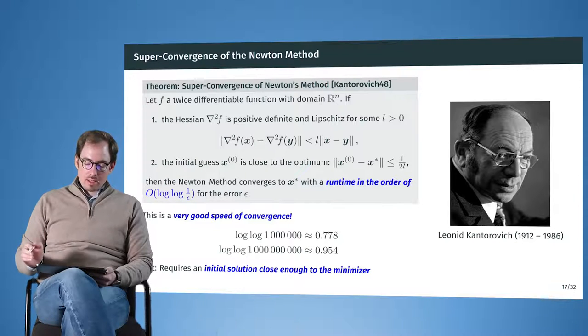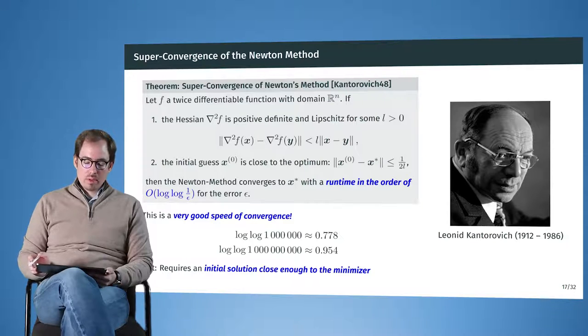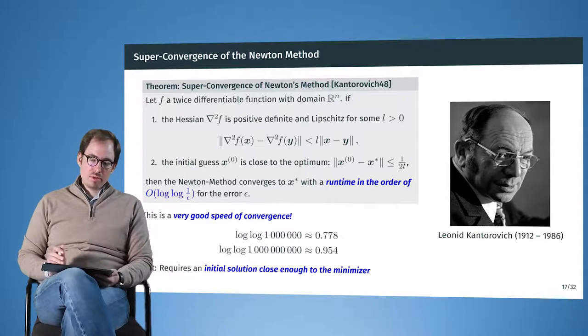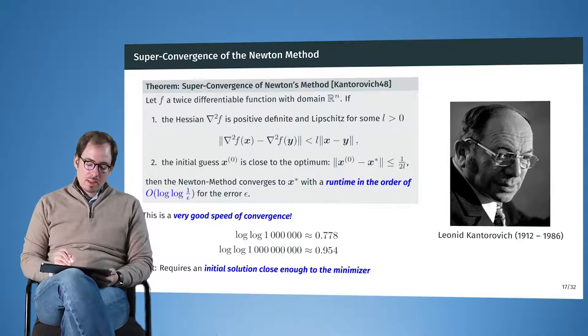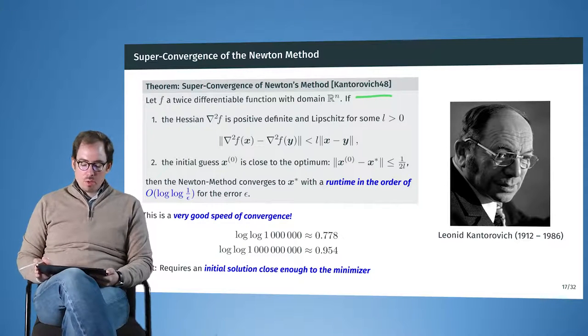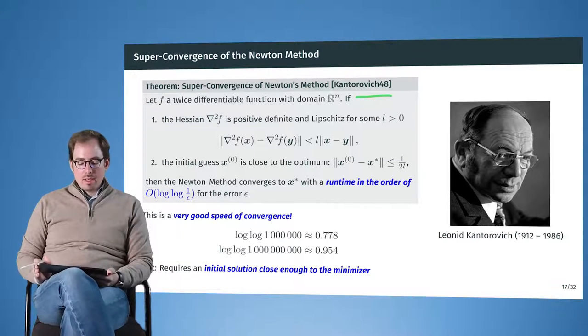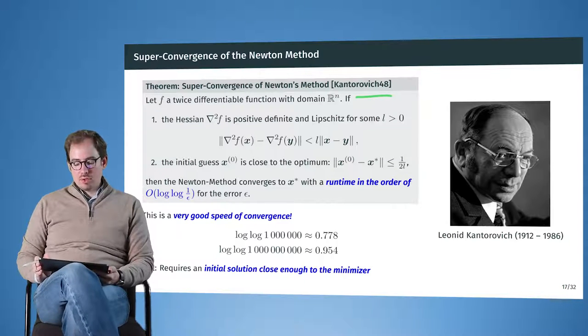There is a body of work that has looked into the convergence speed of the Newton method. And there is one very important theorem by Kantorovic, who proved in the late 40s, the super convergence of the Newton theory. So, Kantorovic, he's interesting, he was a renowned Russian mathematician.